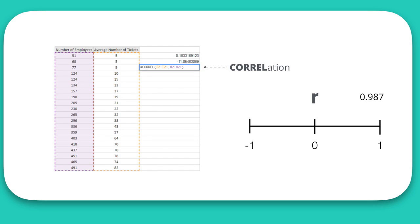In our example, the value of r is 0.987, indicating a strong correlation.